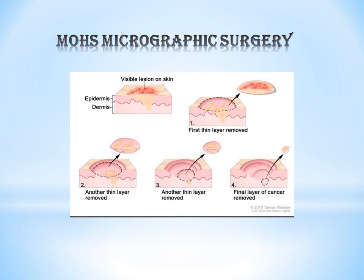This is mainly done for the purpose of treatment of skin cancer. The procedure is as follows: first, a thin layer of tissue is removed from the skin. This thin layer is placed under a microscope and examined for whether any cancerous cells are present.